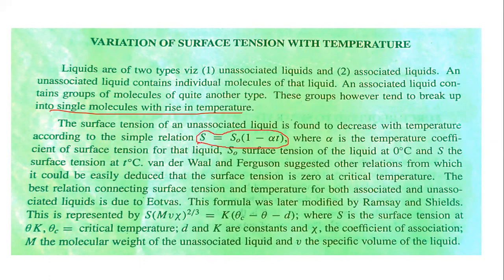In the formula, surface tension decreases with temperature, where alpha is the temperature coefficient of surface tension for that liquid, S0 is the surface tension at 0 degree Celsius, and S is the surface tension at T degree Celsius. Van der Waals and Eötvös suggested other relations. They deduced that the surface tension is zero at critical temperature. The best relation connecting surface tension and temperature for both associated and unassociated liquids was later modified by Ramsey and Shield.